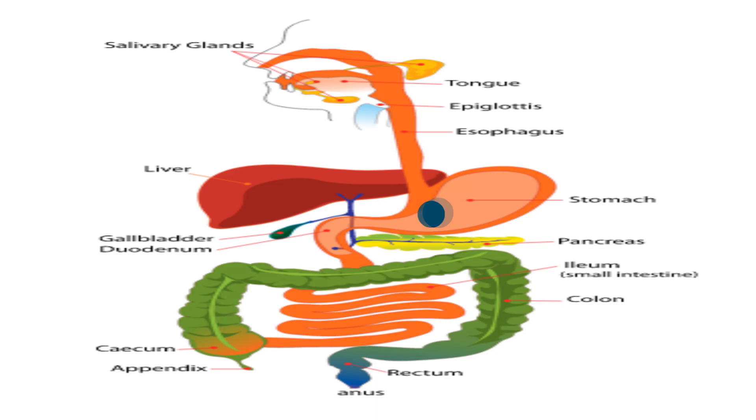The chyme is then passed into the first section of the small intestine. Here bile, which is created at the liver and stored in the gallbladder, and enzymes created at the pancreas are added to the chyme. The bile helps to break down fats by reducing large drops of fat to small droplets.